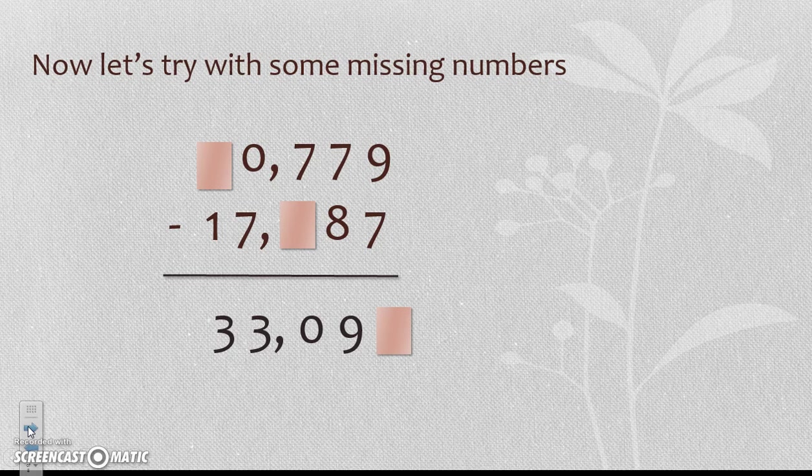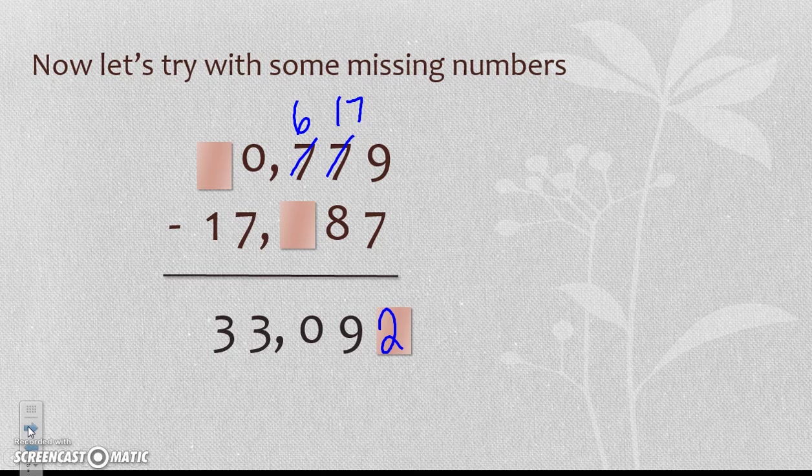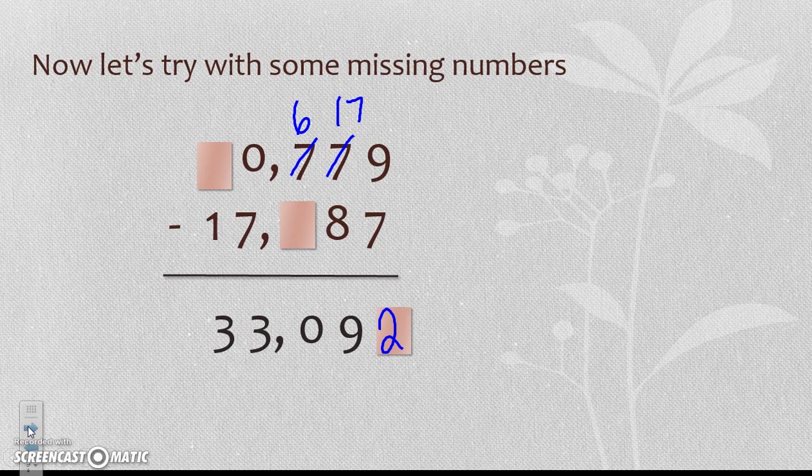Let's try another one together, and then you're going to do the next one. So here I have 7 from 9 is equal to 2, pretty easy, no regrouping. I cannot take 8 from 7, so I have to go next door and regroup. The 7 becomes a 17, this other 7 became a 6, and 8 from 17 is equal to 9. So I'm good.